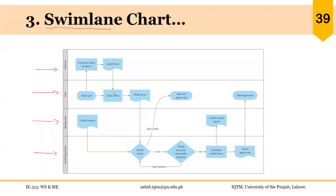The symbol for operation in swim lane diagrams is a rectangle. Please keep in mind that for the rest of the charts we are discussing, the symbol for operation is a circle. But for swim lane chart and one of the flow diagrams we will later discuss, the symbol for operation is a rectangle.